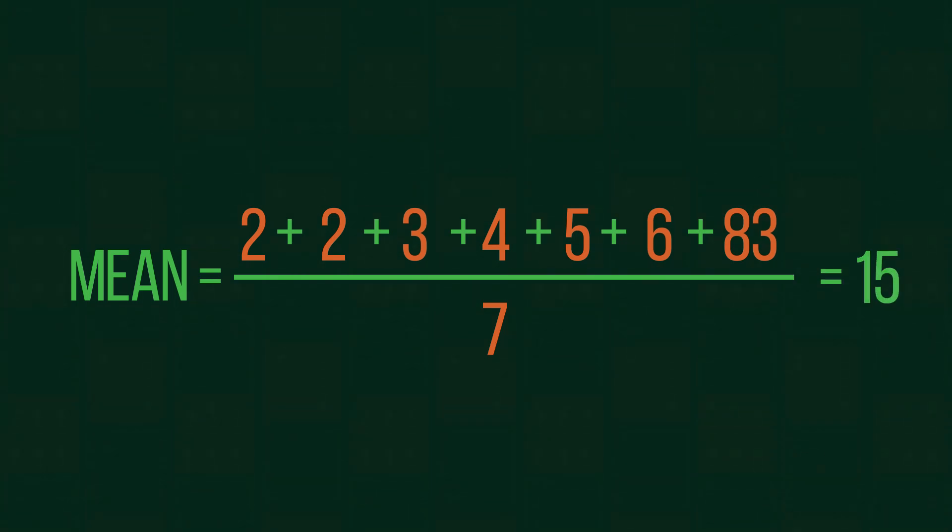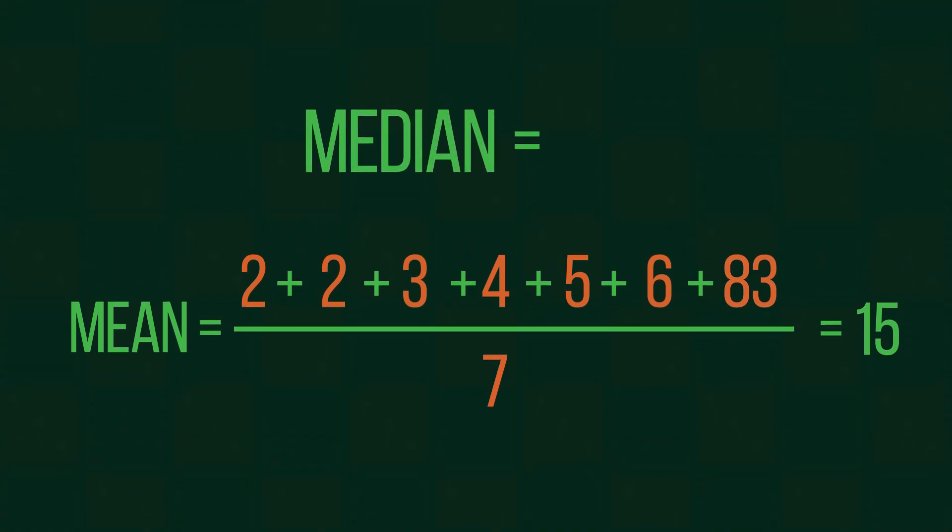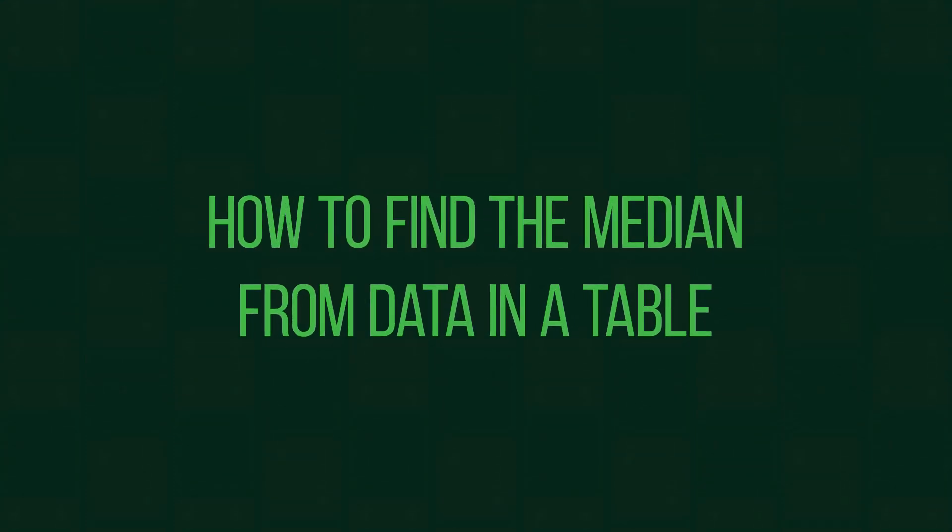The value 15 is not a reflection of the majority of values in the data set because it has been skewed so greatly by the value 83. In this instance, the median is a far better average to represent the data. So in this video we're going to look at how we can find the median from data in a table.